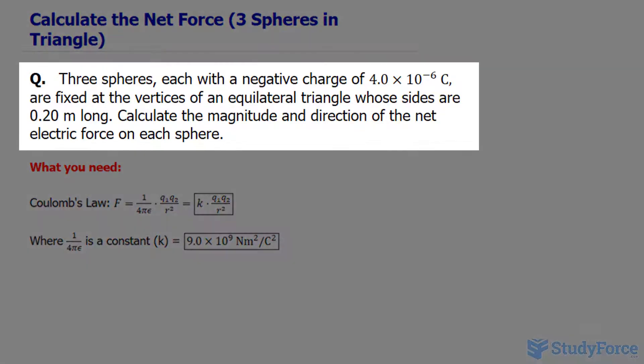The question reads: three spheres, each with a negative charge of 4.0 times 10 to the power of negative 6 Coulombs, are fixed at the vertices of an equilateral triangle whose sides are 0.20 meters long. Calculate the magnitude and direction of the net electrical force on each sphere.